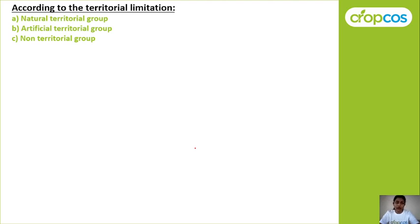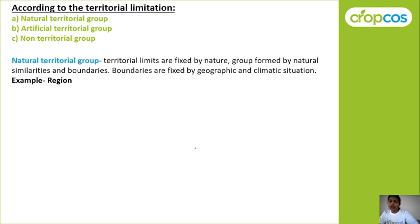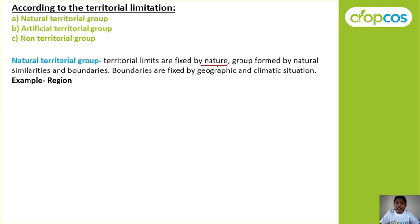Next is classification according to territorial limitation. The group is classified into natural territorial group, artificial territorial group, and non-territorial group. In a natural territorial group, the territorial limits are fixed by nature — the group is formed by natural similarities and boundaries, which are fixed by geographic and climatic situation.